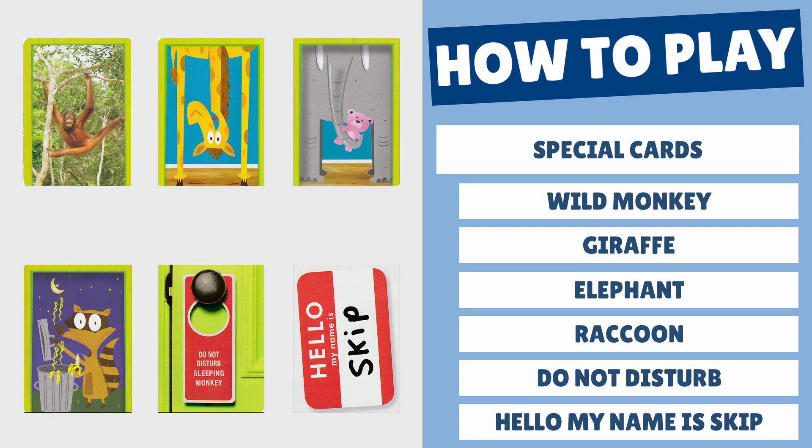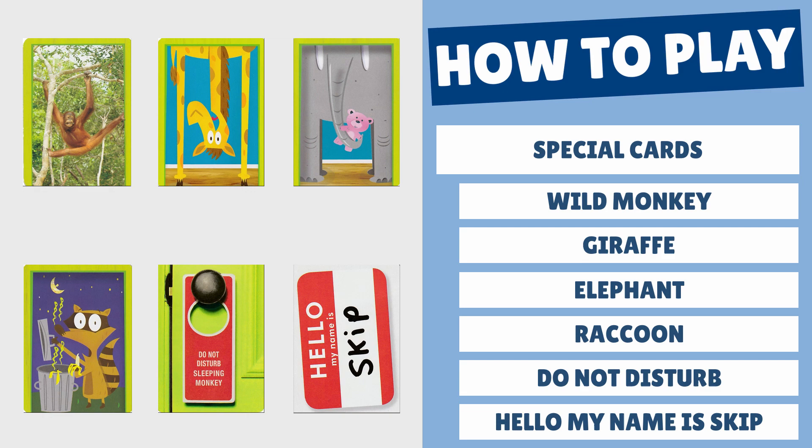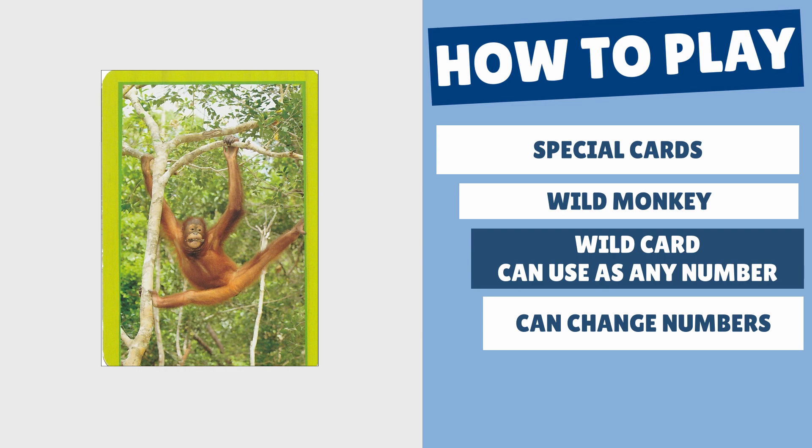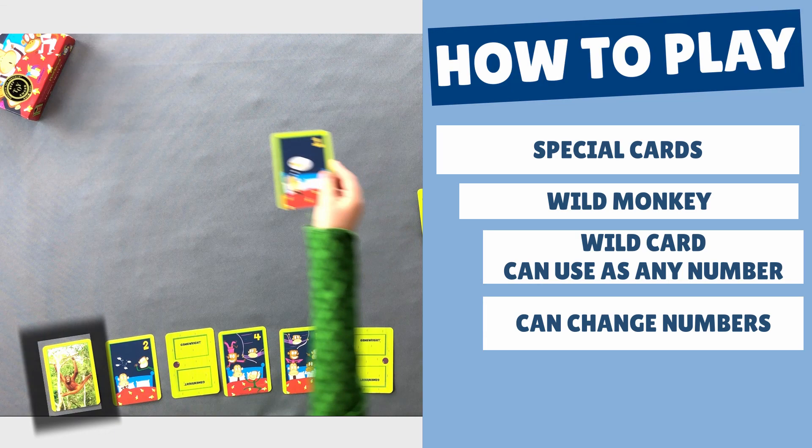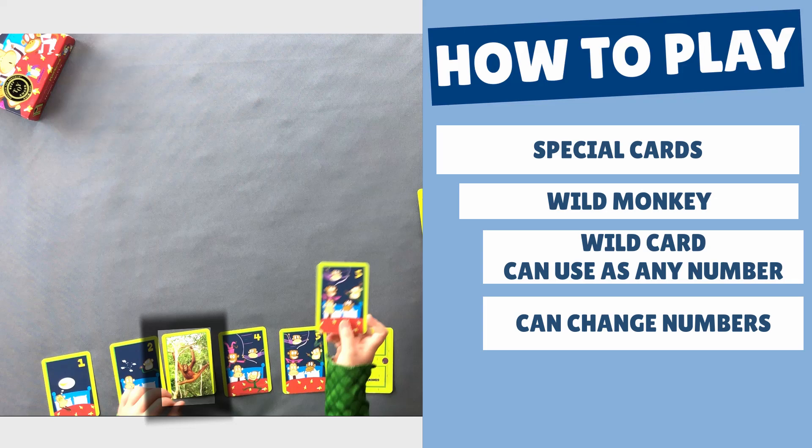If you draw or flip over a special card on your turn, here's what you'll do. If you get a wild monkey, it's a wild card and can be any number you want. And it can even change numbers. For example, if you already used it as a number one, but then draw the number one card, swap them and use the wild monkey as any other number you need.